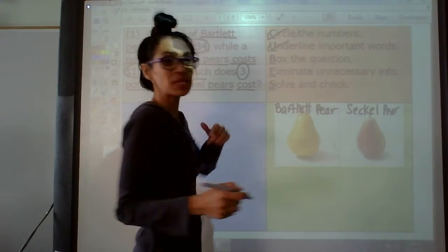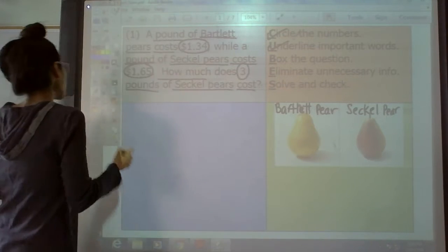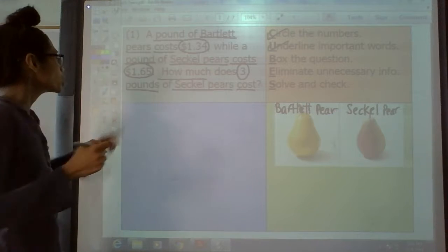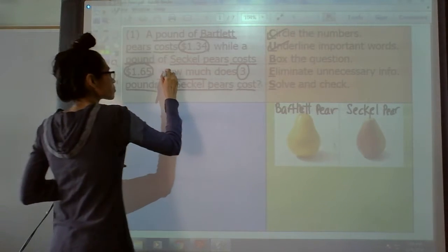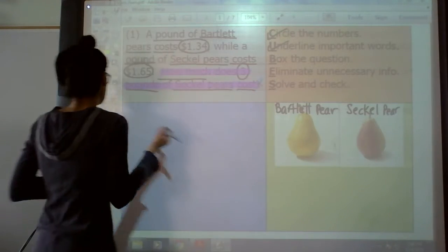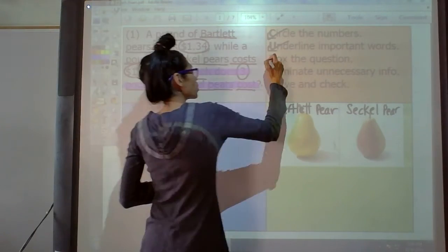The next step is the B step. Box the question. You can box it. You can circle it. I am going to highlight that. What do you see? How much does three pounds of Seckle pears cost? That was an easy step. Done with that.